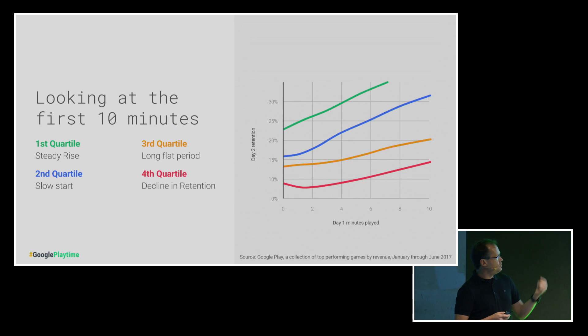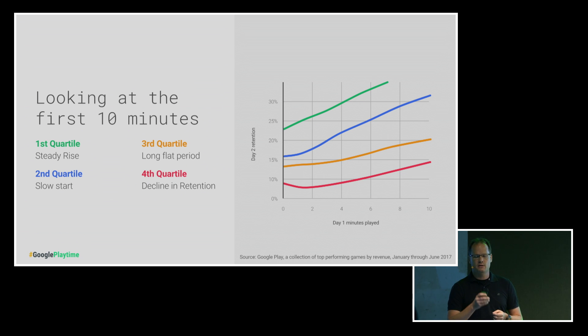Zooming into that first 10-minute window, very different shapes and patterns emerge. The top quartile — the green line — starts out strong and just steadily increases. But the blue line, the second quartile, shows a short 90-second window where retention is largely flat and only then begins to pick up. That pattern increases further in the third quartile, where retention is largely flat for the first four minutes, and in some games extends out to 10 minutes. And in the bottom quartile, the worst performers, retention actually declines across the first few minutes before beginning to rise.